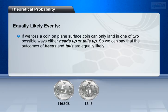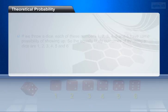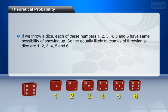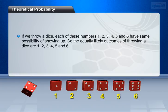If we throw a dice, each of the numbers 1, 2, 3, 4, 5, and 6 have the same possibility of showing up. So the equally likely outcomes of throwing a dice are 1, 2, 3, 4, 5, and 6.